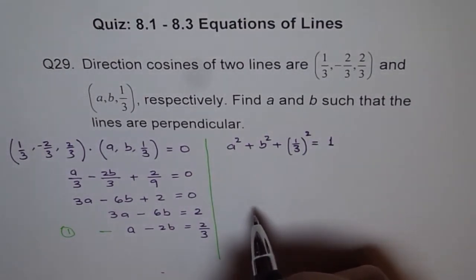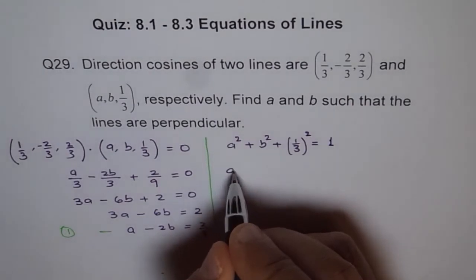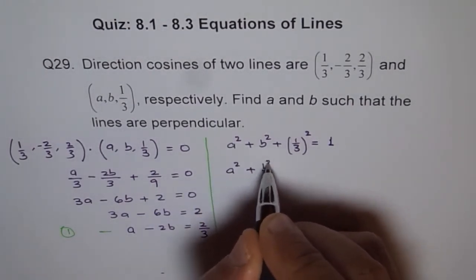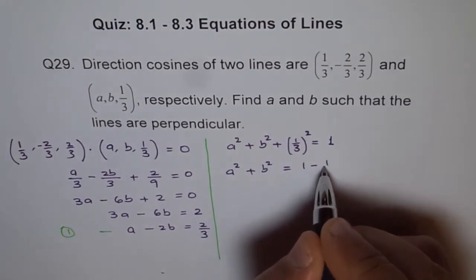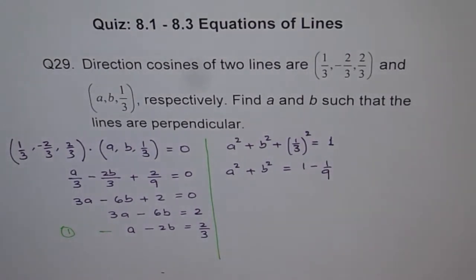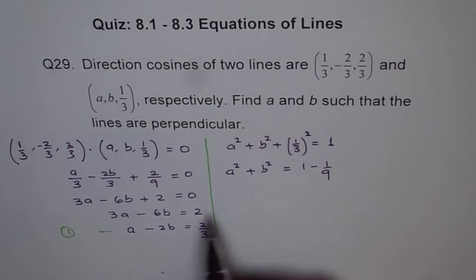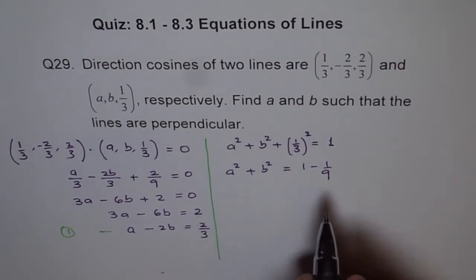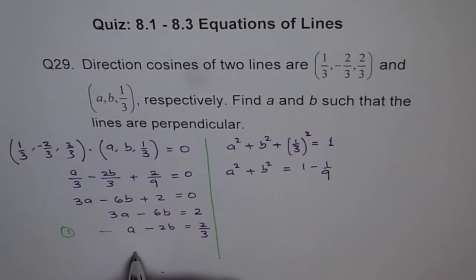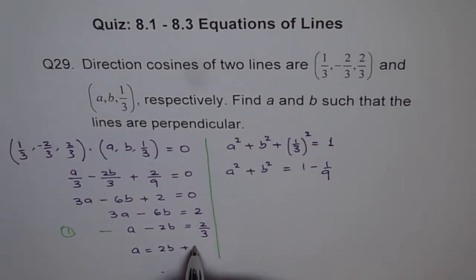From here we get A² + B² = 1 - 1/9 = 8/9. Now we can plug in A from Equation 1 so that we have an equation in B only and solve for B. Writing A = 2B + 2/3.